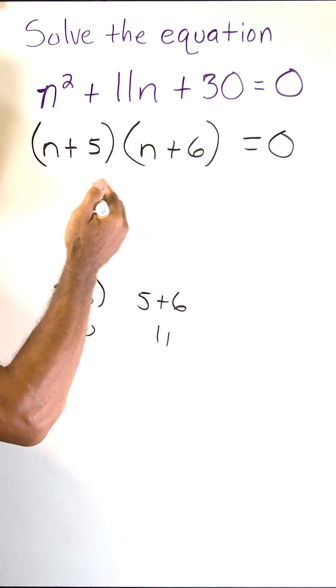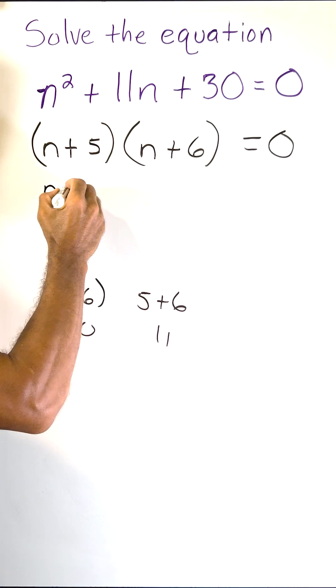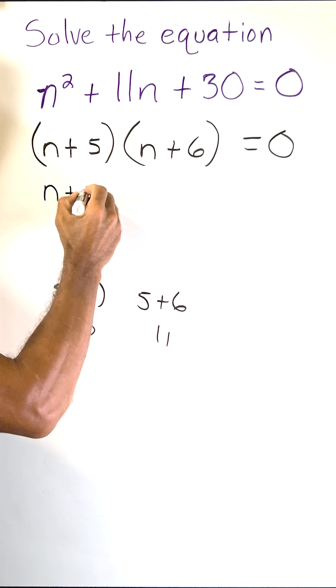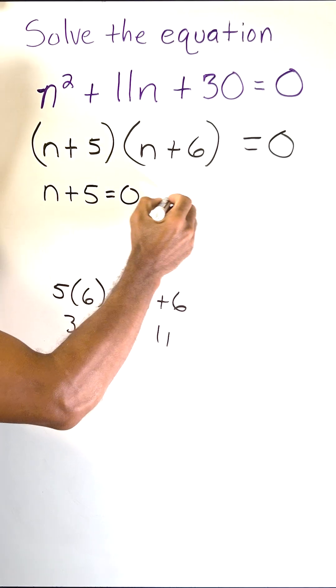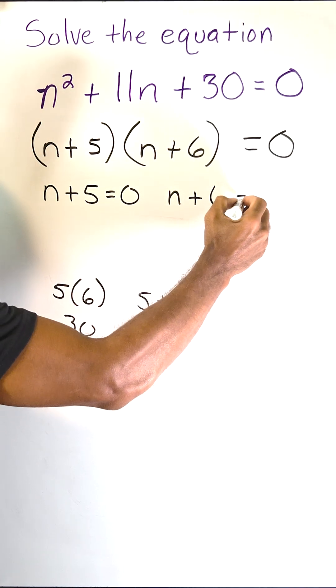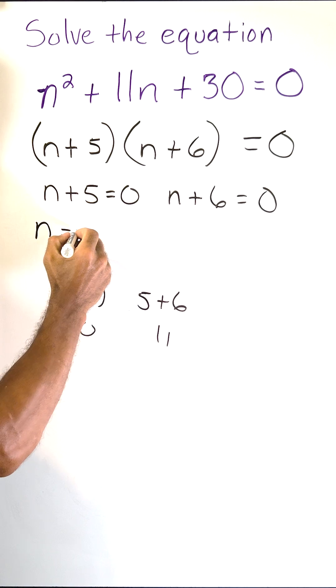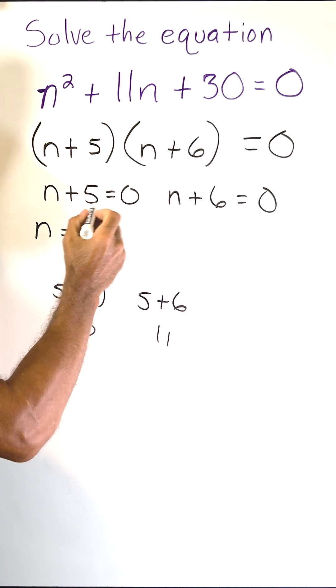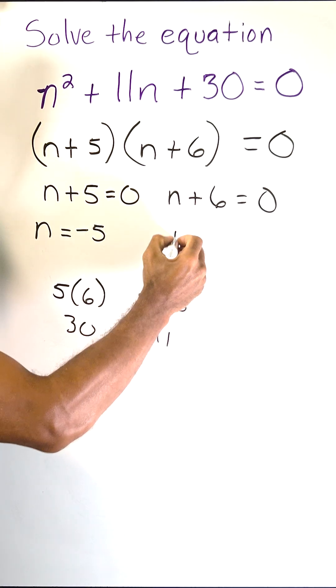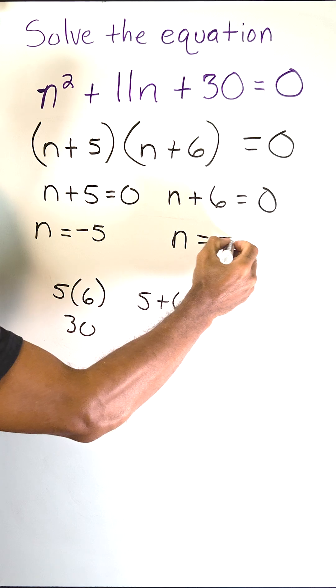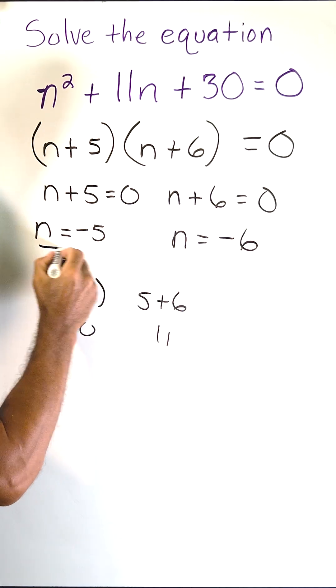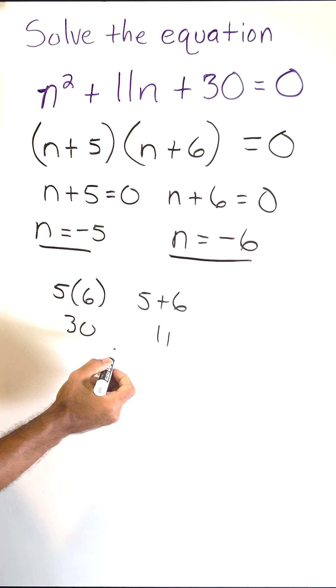So what we're going to do is set each one of these factors equal to 0 and solve. So we have n plus 5 equals 0, and we have n plus 6 equals 0. So over here, n has to be equal to negative 5 because that's what you would add to 5 to make 0. And over here, n is equal to negative 6. So negative 5 and negative 6 are the two solutions to this quadratic equation.